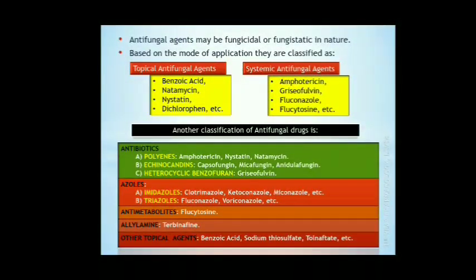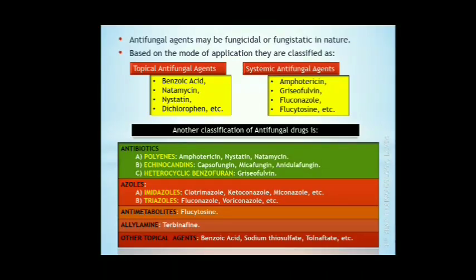Classification of anti-fungal agents. Anti-fungal agents may be fungicidal or fungistatic in nature — if it inhibits growth it is fungistatic, and if it kills completely it is fungicidal. Based on mode of application, they are classified as topical and systemic antifungal agents. Topical agents are applied locally; systemic agents work by oral or other routes. Benzoic acid, natamycin, nystatin, and dichlorophen are some topical antifungals. Amphotericin, griseofulvin, fluconazole, and flucytosine are systemic antifungal agents.